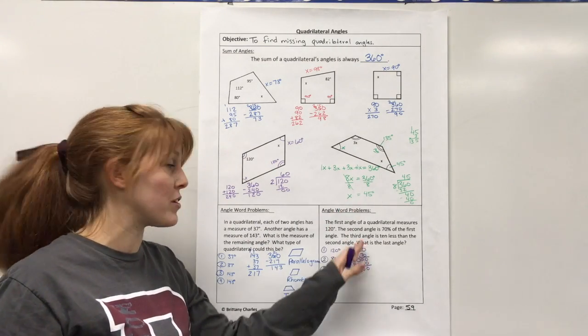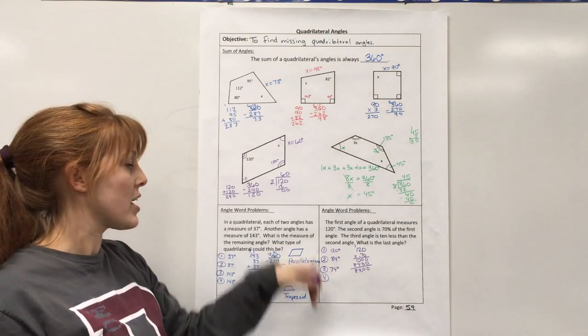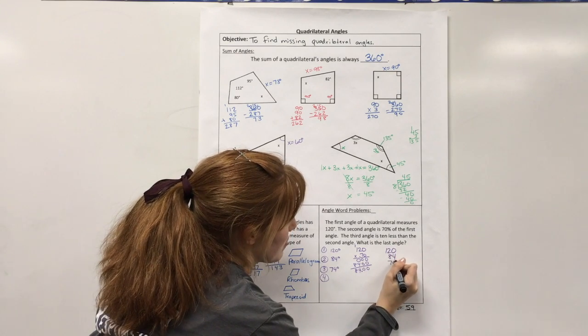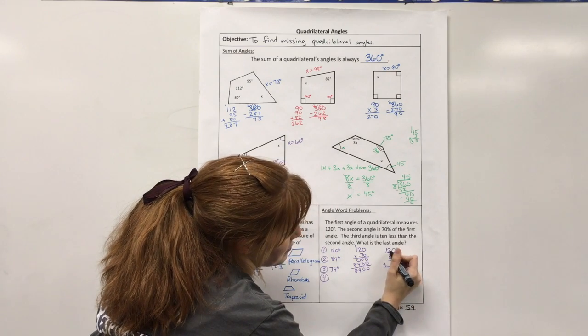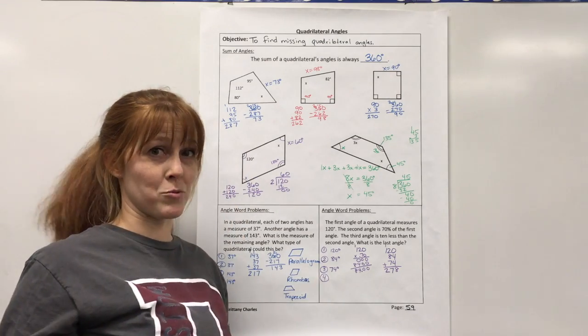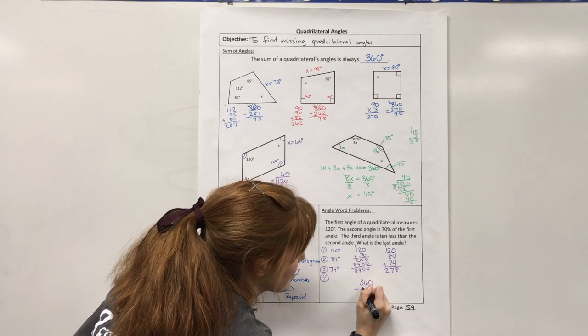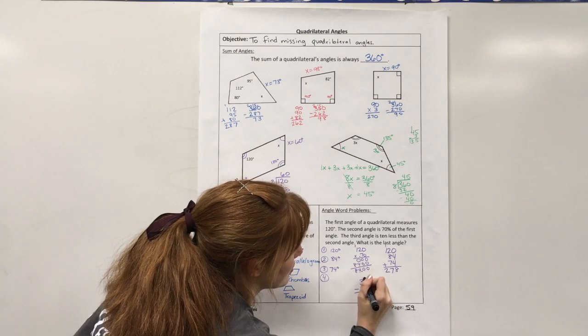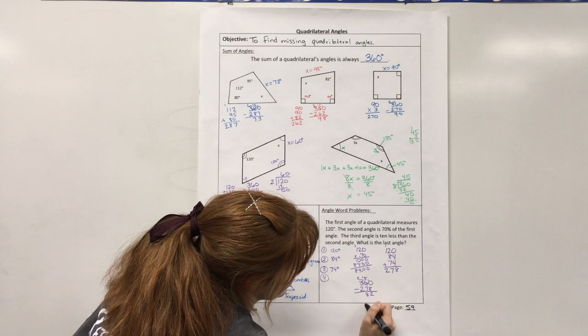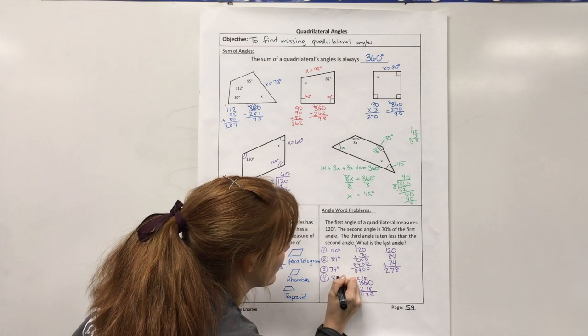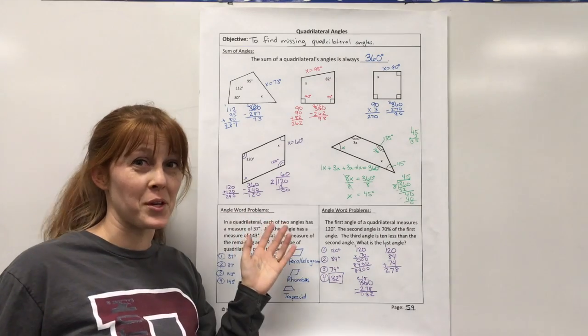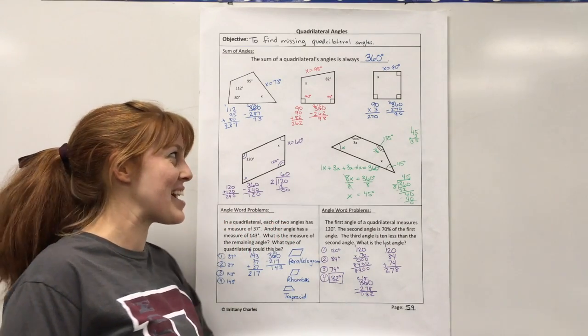What is the last angle? So now that I've done this previous work, I can just find the last angle. So 120 plus 84 plus 74, that equals 278. And then 360 minus 278 equals 82. So then this last angle has to be 82 degrees. So make sure you look over this stuff and you're very familiar because you might see it again. And thanks for watching.